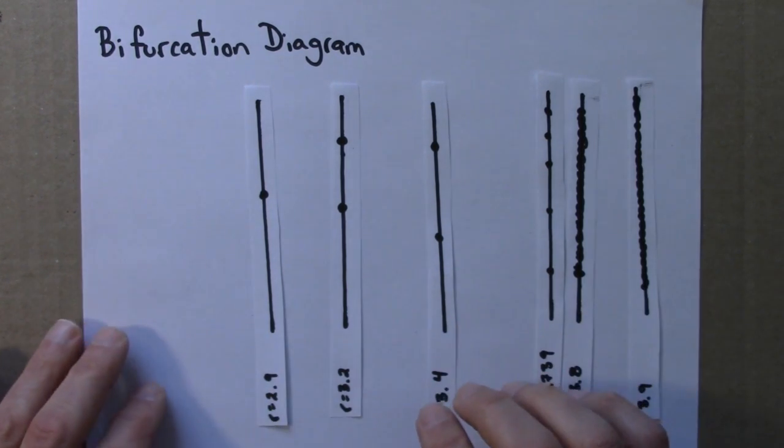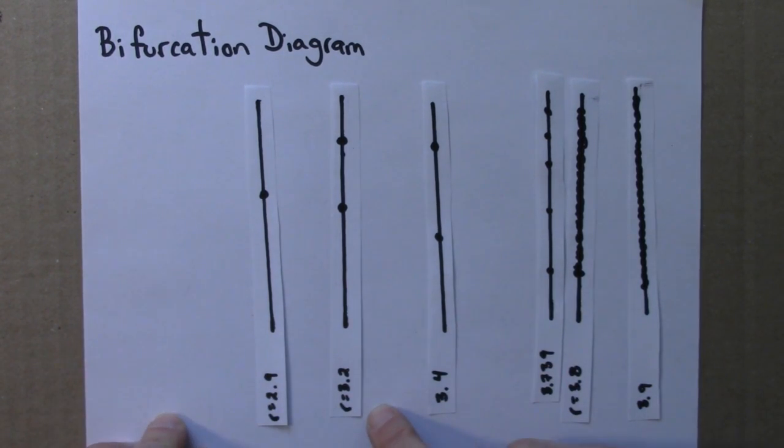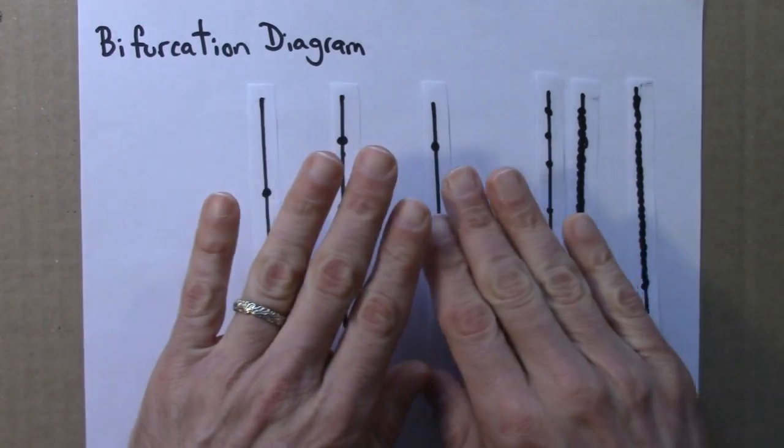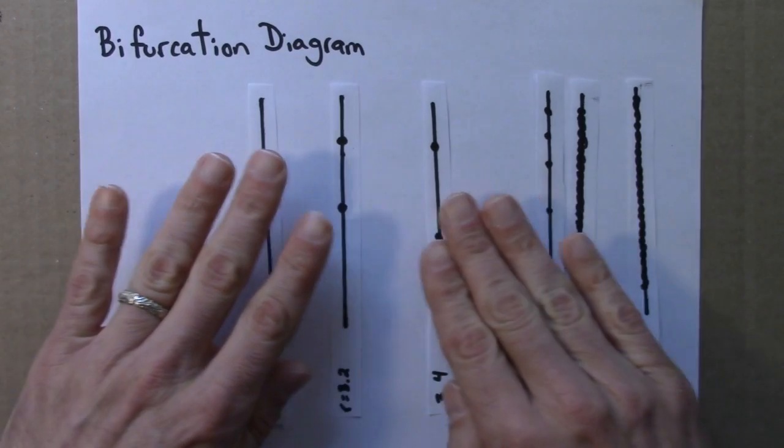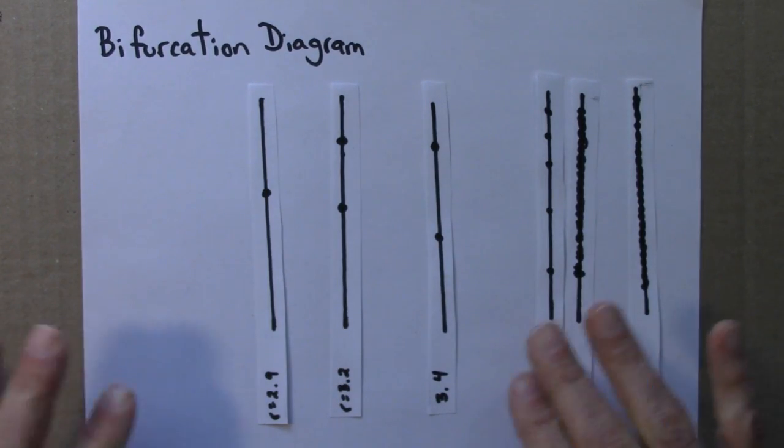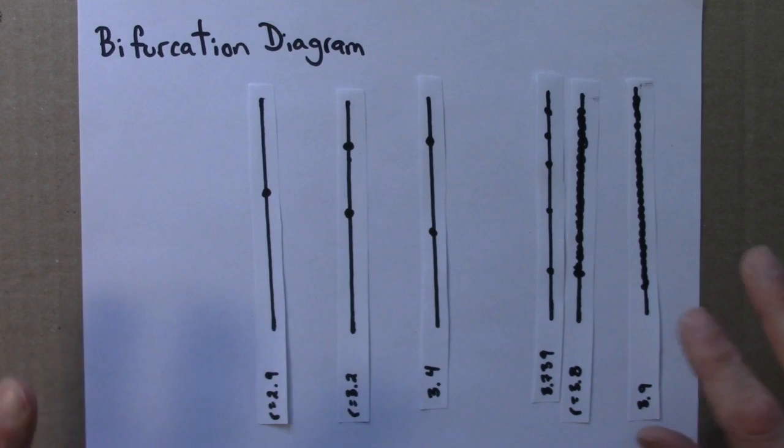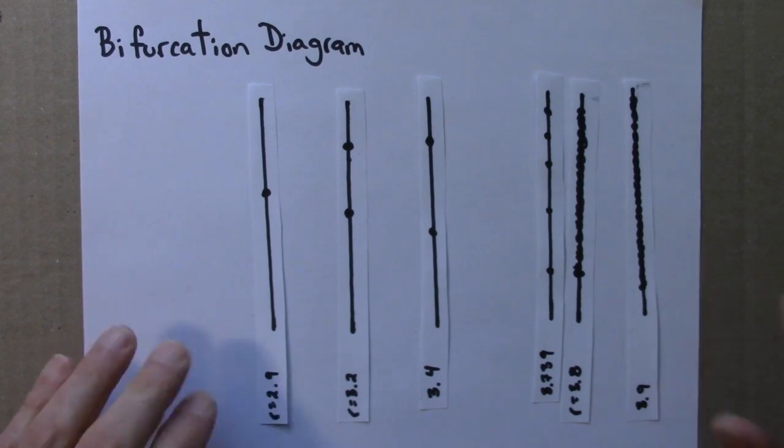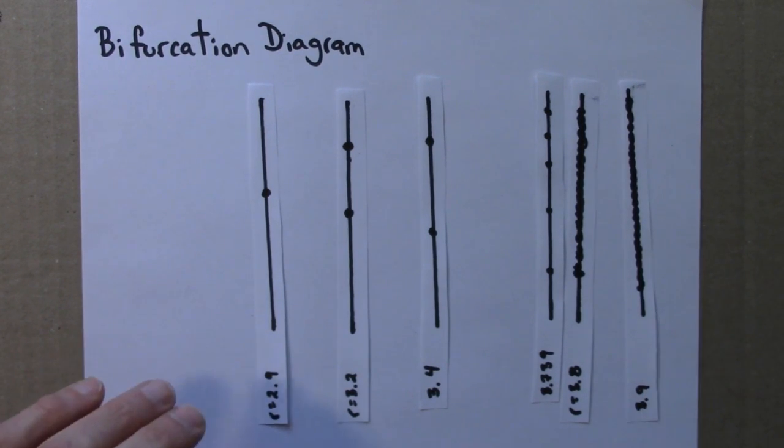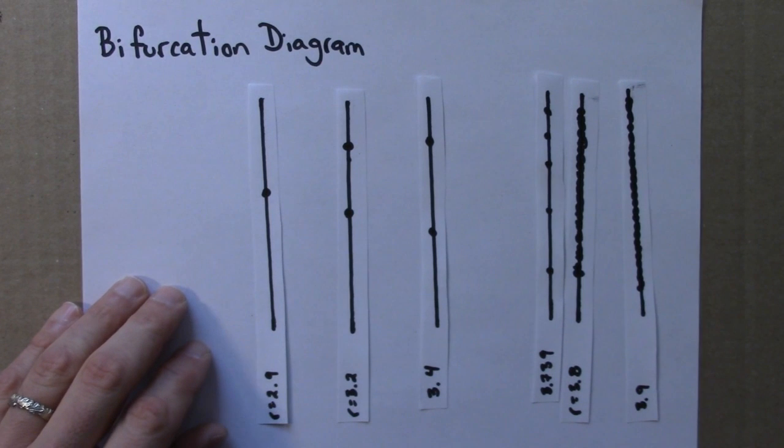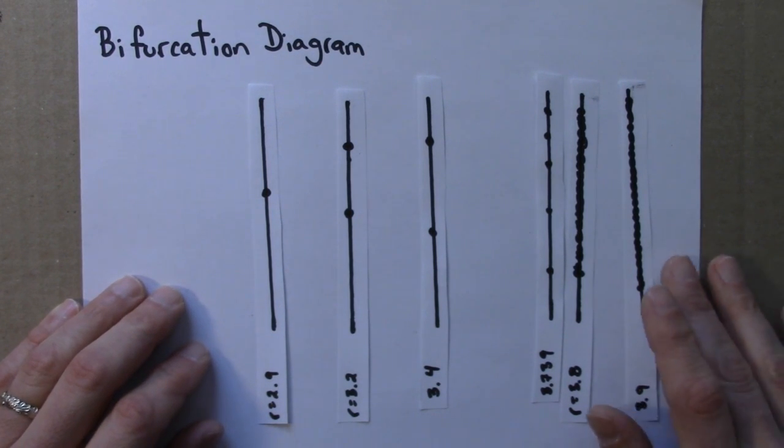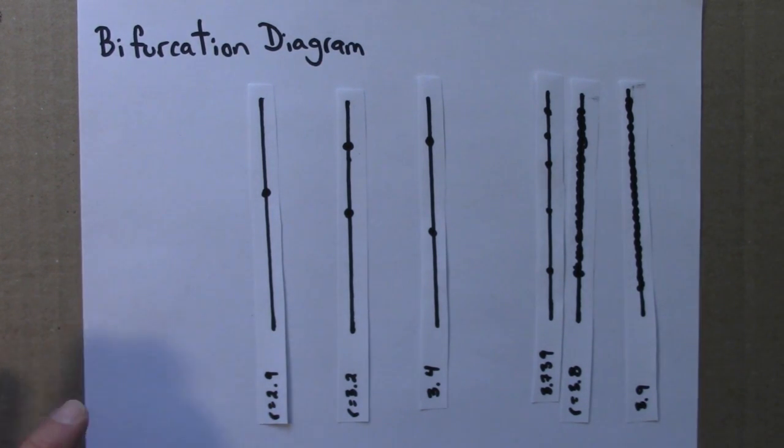So in order to sort of see a pattern, to connect the dots so to speak, we would need to try this out for many, many more R values, and make many more phase lines, and stack them all in here densely, so that we can see what happens from one R value to the next. So, as you've probably guessed, I'll use a computer to do that work for us. And I'll show you the program and how it works in a little bit, but first, let's focus on what the results are.